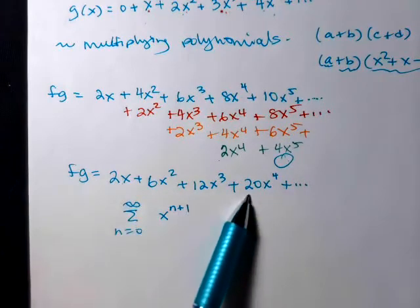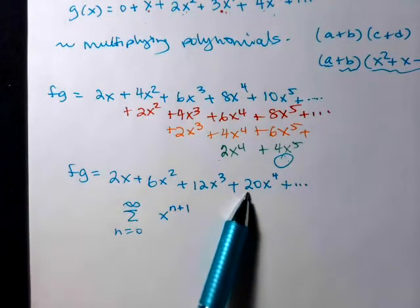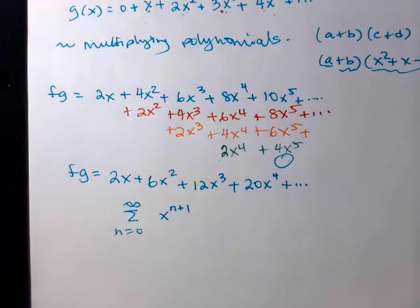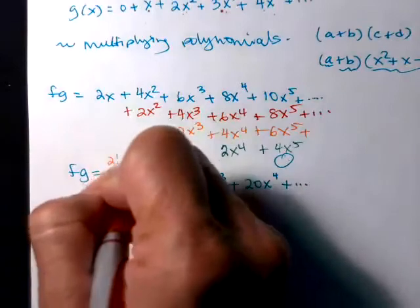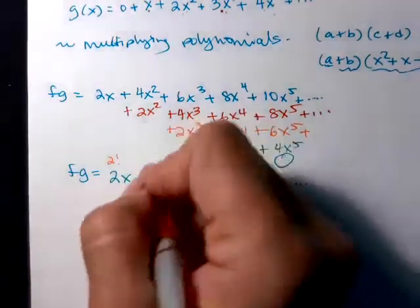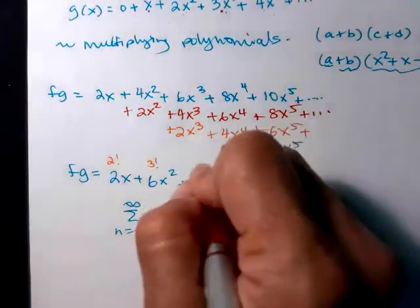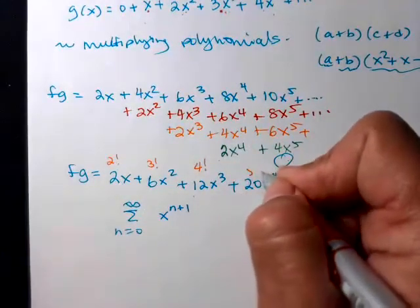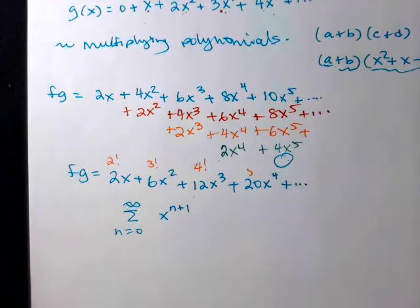Now what about those coefficients? I've got a 2, then a 6, then a 12, then a 20. I'm sure there are different ways to do that. What I see is a factorial. So 2 is 2 factorial. 6 is 3 factorial. 12 is 4 factorial. Oh, that's not true. 12 is not 4 factorial. I'm going to pause and look again.